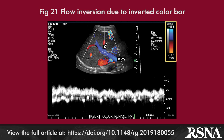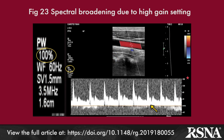Flow direction ambiguity may be due to aliasing, positioning of the color and spectral baseline too high or too low, variable positioning of the transducer relative to the vessel under investigation, and other factors that the authors review. An artifact related to flow ambiguity is crosstalk or mirror image pattern, seen when the ultrasound beam intersects the vessel at approximately 90 degrees. Spectral broadening, as illustrated in Figure 23, reflects flow disturbance due to stenosis, but may also be due to technical factors in the absence of vascular obstruction.